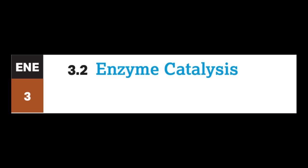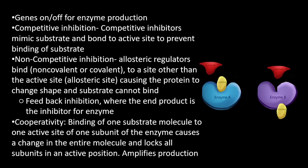There are a few ways we control enzymes in our body. Competitive inhibition: inhibitors mimic the substrate and bond to the active site, preventing the substrate from bonding — so the molecule cannot be separated or joined. Non-competitive inhibition consists of allosteric regulators which bind to a site other than the active site, not directly blocking where the substrate goes.